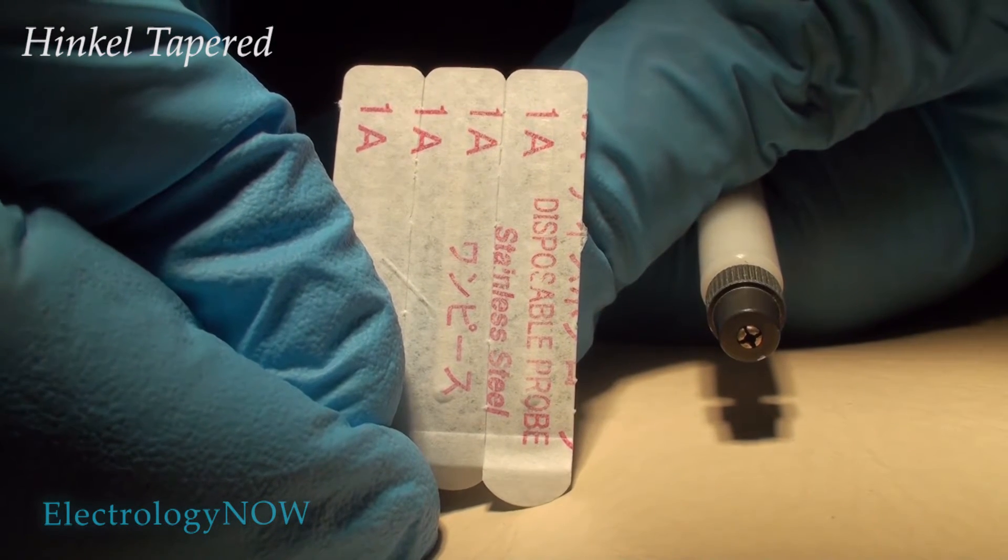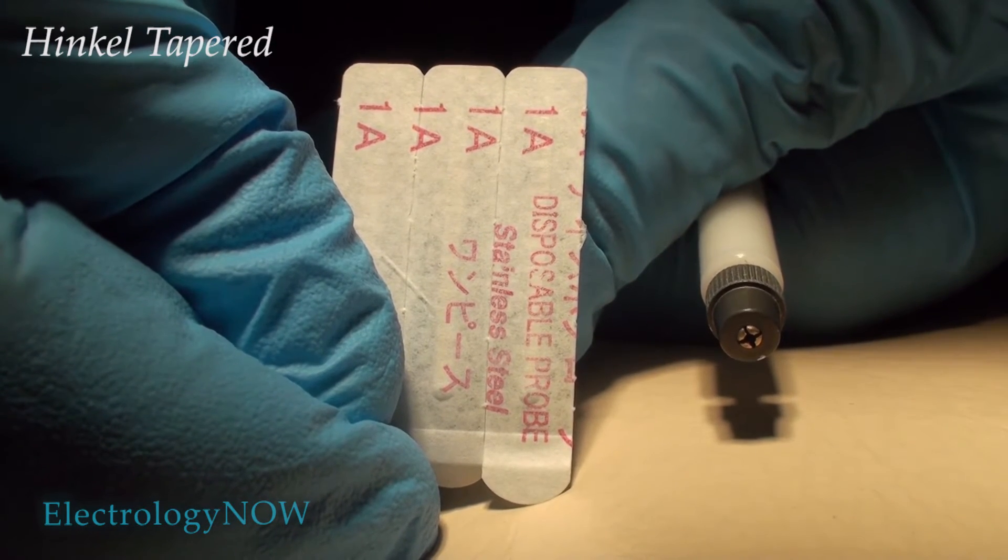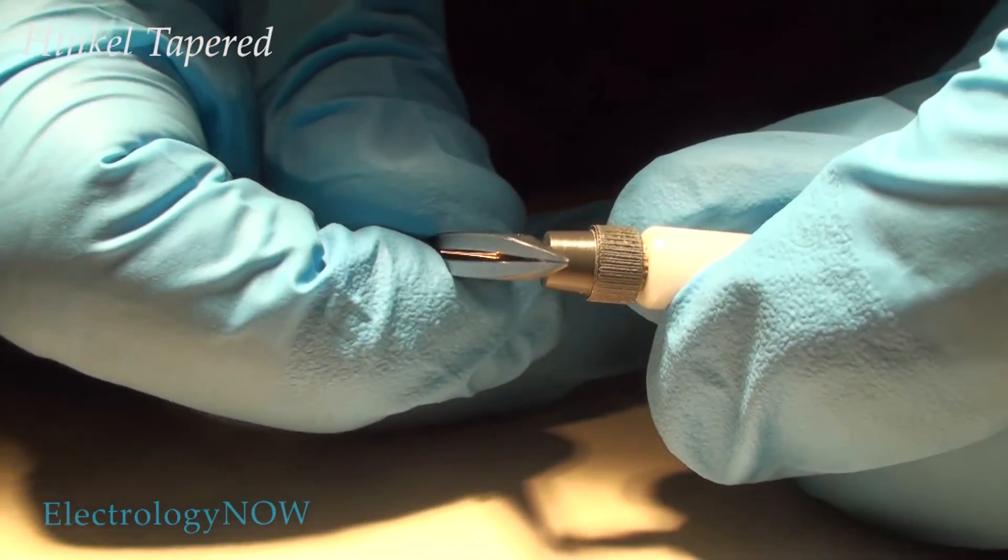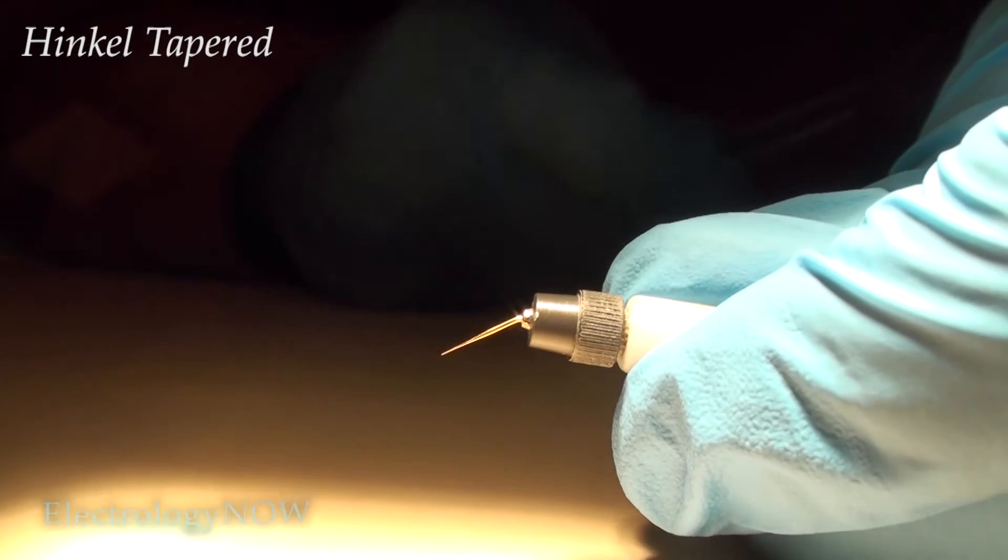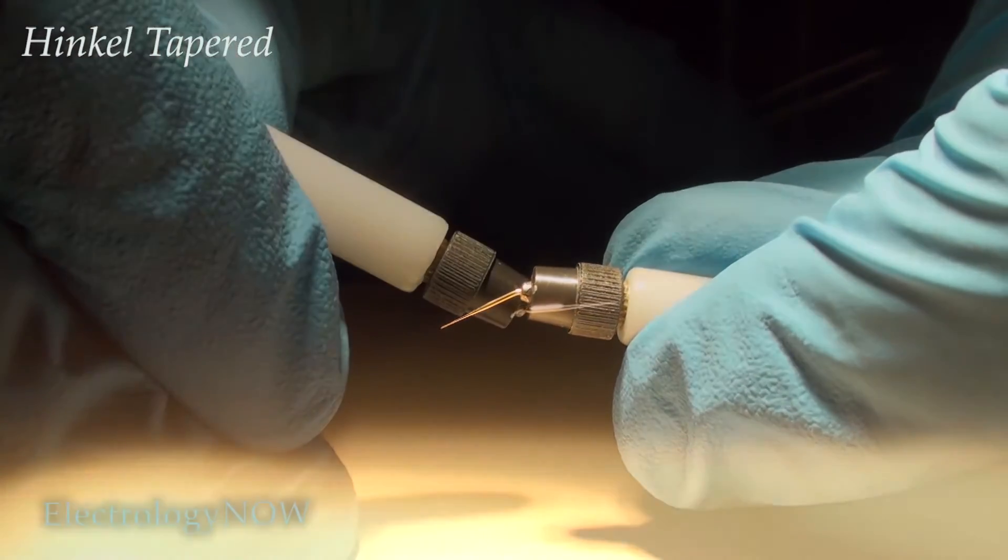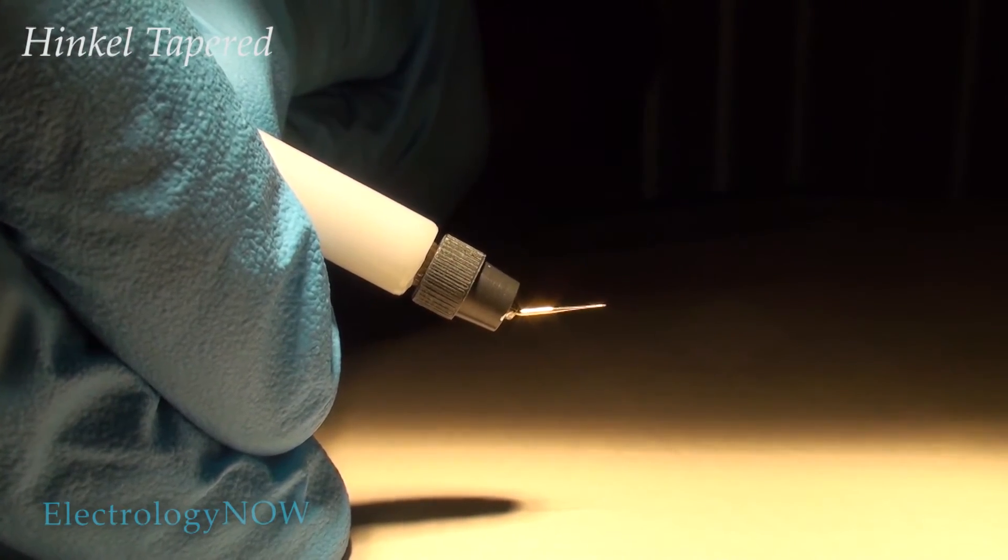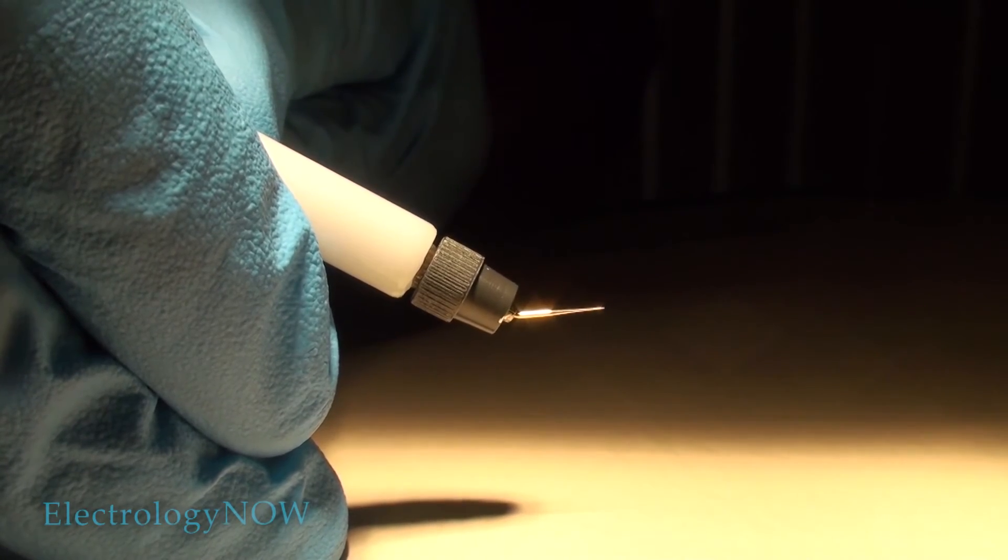These are needles that were made in Japan for the Hinko Company. They're tapered needles and they're very nice. These needles bent very easily and they were gold-plated. This is the Hinko gold-plated tapered needle. They're no longer available.